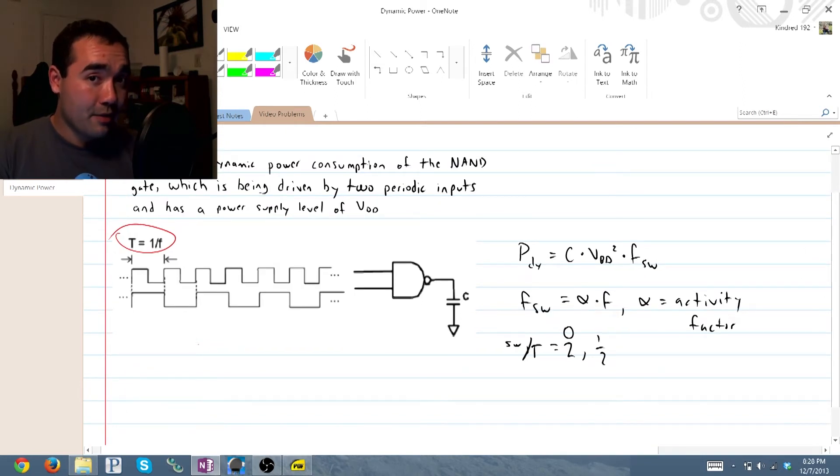Now what this means is that we already have some kind of time reference to gauge our output by. And knowing your truth tables for NAND gates, you know that when both inputs are high, our output will be low, and otherwise our output will be high.